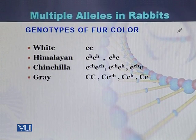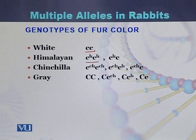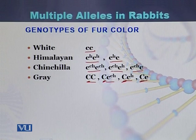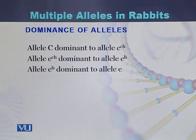White will occur when the allele is c in homozygous form. Himalayan will be when there is ch or c allele. Chinchilla will have three different genotypes, while gray will have four different genotypes. So there are 10 different genotypes in total. Gray occurs when there is the dominant allele C.